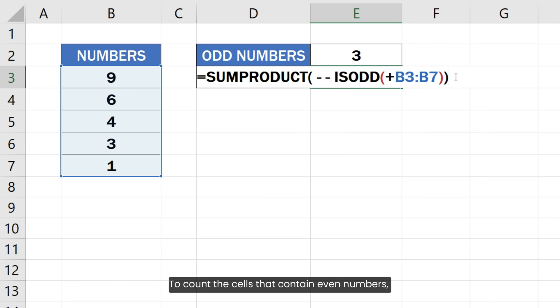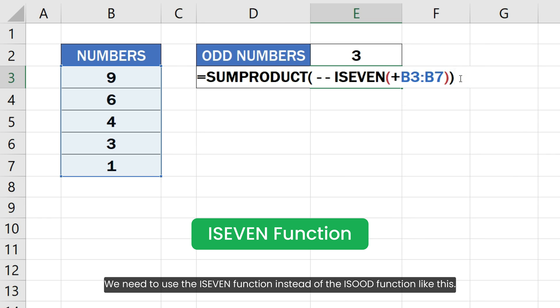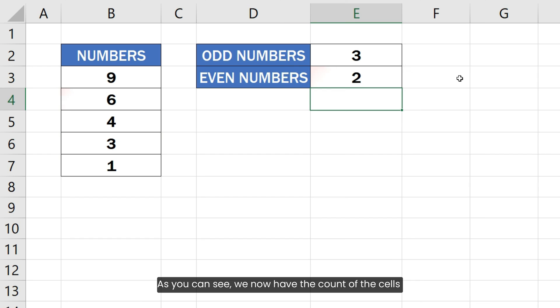To count the cells that contain even numbers, we can use the same formula with one change. We need to use the ISEVEN function instead of the ISODD function like this. As you can see, we now have the count of the cells containing even numbers in the given range.